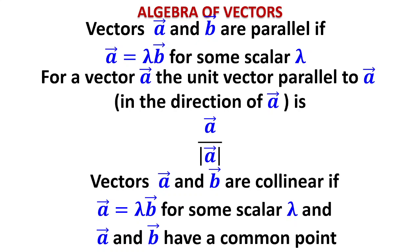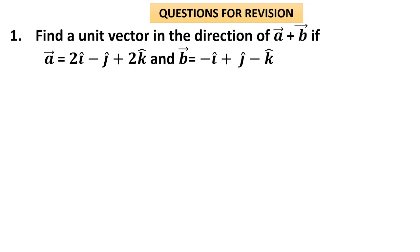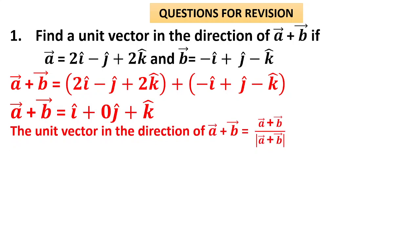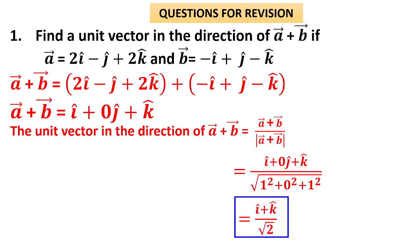Question 1: Find a unit vector in the direction of vector a + vector b. First, find a + b by adding only the corresponding components: the i-components give i, the j-components (−j + j) give 0j, and the k-components (2k − k) give k. So a + b = i + 0j + k. The unit vector in the direction of any vector is that vector divided by its magnitude: (i + k) / √(1² + 0² + 1²) = (i + k) / √2.